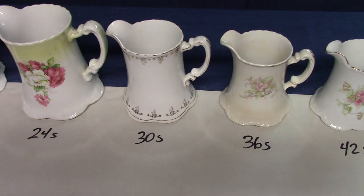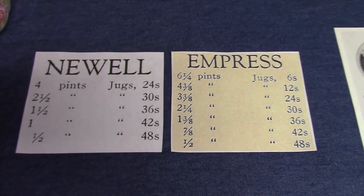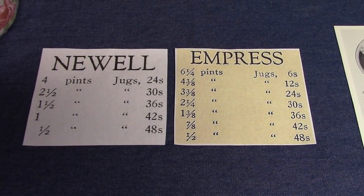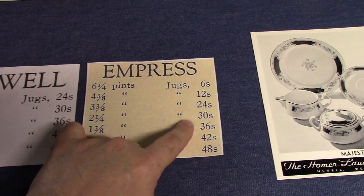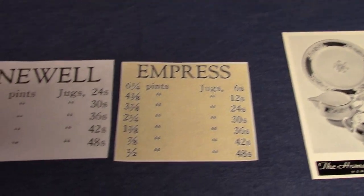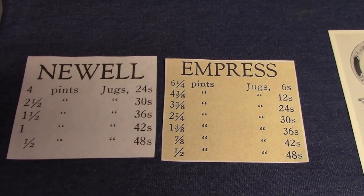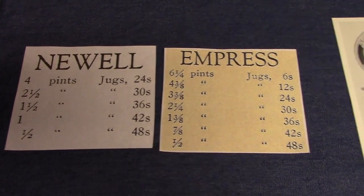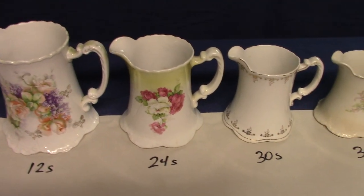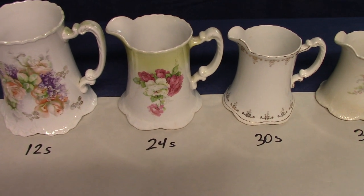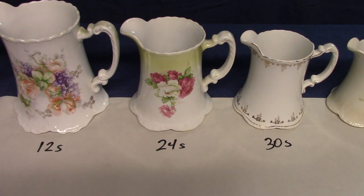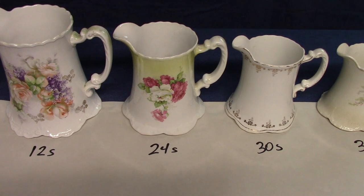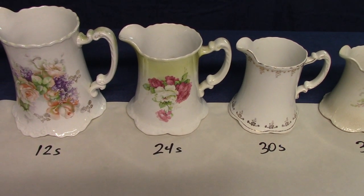There are two reasons why. One is habit — it was used for so many years that it was a hard habit to break. The other has to do with committing to a specific size. Looking at Newell jugs and Empress jugs from Homer Laughlin catalogs, the Newell 24s is four pints while the Empress 24s is three and three-eighths pints. So there's no conformity — not only between potteries, but within a pottery with respect to its own shapes. But the 24s jug is the most important jug for the shapes examined, from Victor all the way to Trellis, and every shape pretty much guarantees a 24s jug.